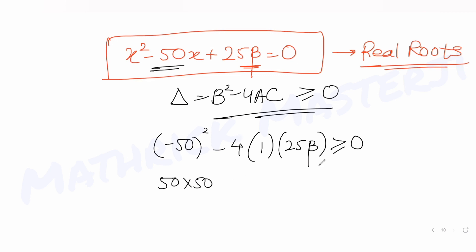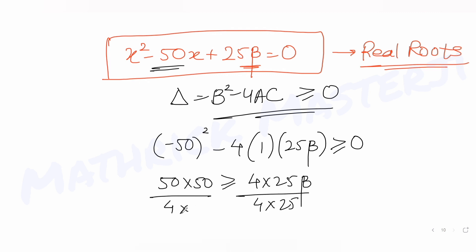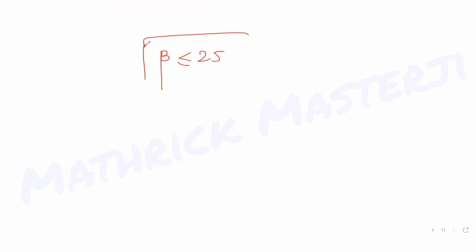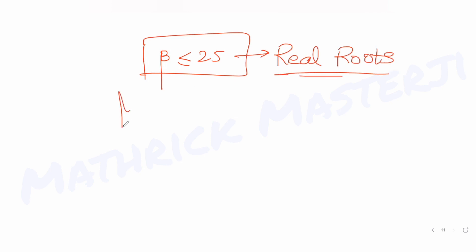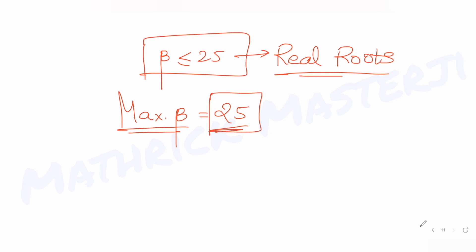From 50×50 ≥ 4×25β, dividing both sides by 4×25, we get β ≤ 25. So the condition for real roots is β ≤ 25, and the maximum possible value of beta is 25.